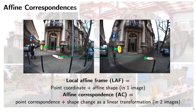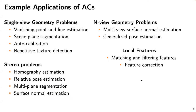A fine correspondence is a correspondence between two local fine frames or affine features - that's very simple. Why should you care about this? Normal keypoint correspondences are mostly used for geometry-related problems: single view geometry like optic rectification, two-view geometry for finding relative camera pose, multi-view geometry, and so on.